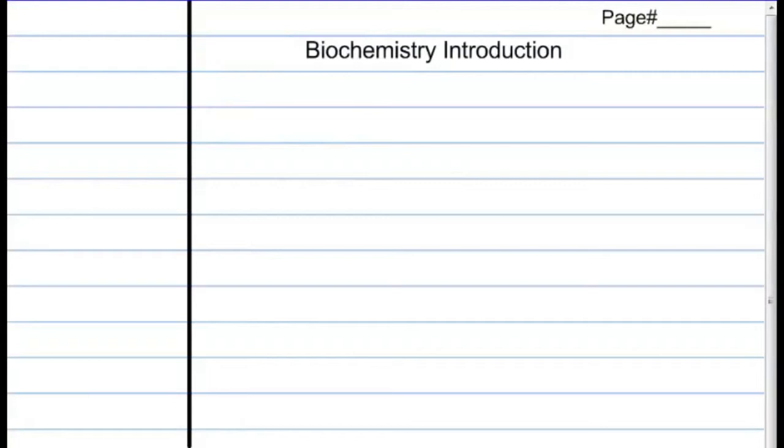You guys are going to create a note sheet in your notebook for this. Instead of having one that's already taped in, you're going to take a blank page in your notebook. You're going to write biochemistry introduction with a page number, then you're going to draw a line down the left hand side of the page.